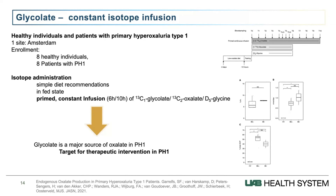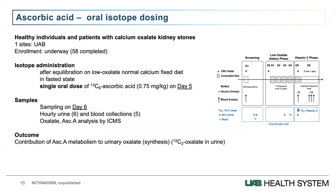In a similar study, a group from Amsterdam looked at glycolate, another precursor, enrolling healthy patients and those with PH1. They infused labeled glycolate as a triple infusion and looked at the contribution of glycolate to oxalate generation. In healthy volunteers, glycolate is barely any source at all because AGT is functional. In PH1, where AGT is dysfunctional, glycolate accounts for about 60 percent of oxalate synthesized. This means glycolate is a perfect intervention target for PH1, which is precisely what the new FDA-approved drug did — targeting glycolate metabolism to oxalate and nearly normalizing urine oxalate excretion in PH1 patients.